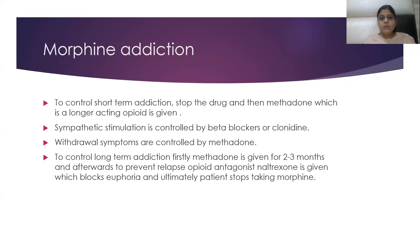For long-term addiction, where the patient has been taking the drug for months or years, we cannot stop the drug abruptly. We give long-term treatment with methadone first, which leads to fewer withdrawal symptoms. Afterwards, to prevent relapse, we give the opiate antagonist naltrexone, which blocks euphoria. The doses are decreased slowly over two to three weeks, and ultimately naltrexone is stopped, and the patient becomes free from opioid dependence.